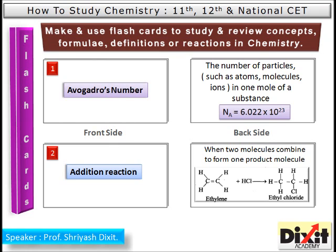The next concept is flashcards. Make use of flashcards to study and review concepts, formulae, definitions, or reactions in chemistry. A flashcard is similar to a visiting card. Take a blank card — on the front side write a concept, and on the back side explain the concept in brief. For example, 'Avogadro's Number' on the front; on the back: the number of particles such as atoms, molecules, or ions in one mole of a substance. Avogadro's number is equal to 6.022 × 10²³.